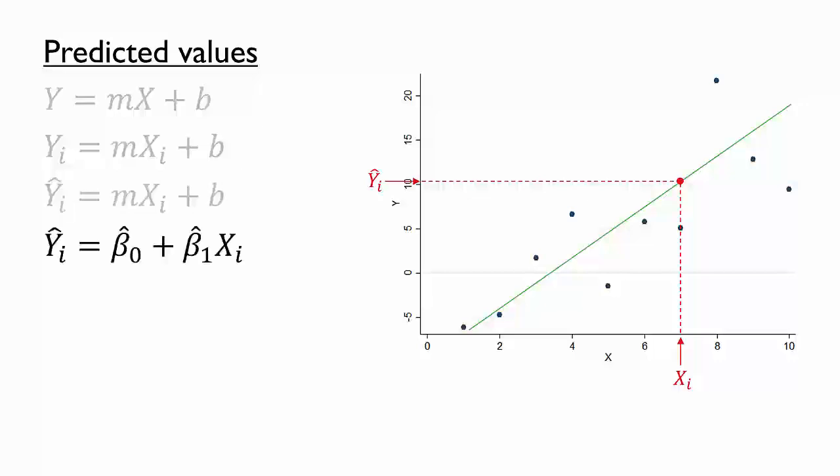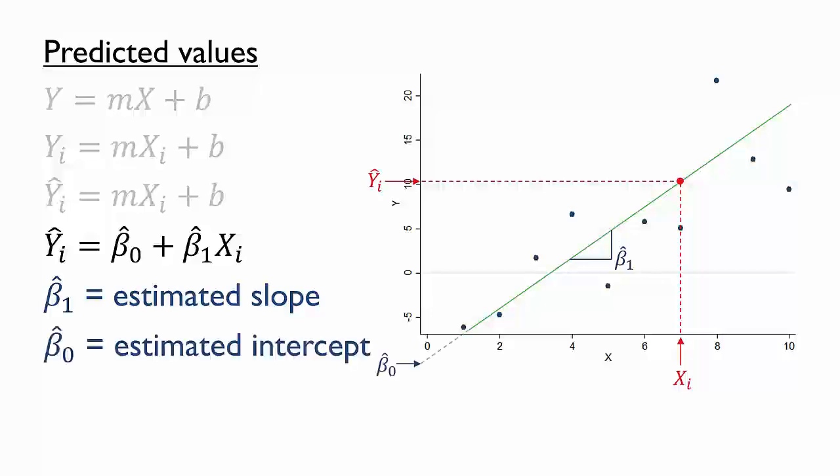Finally, we use the Greek letter beta in place of m and b. β₁ is the slope and β₀, sometimes called beta naught, is the y-intercept, that is the predicted y when x equals 0.